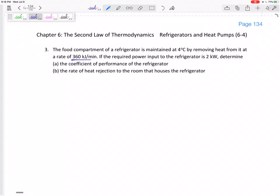A lot of this is just units and unit conversions and also figuring out what the problem statement is really telling us. It tells us 360 kilojoules per minute, what is that? It tells us 2 kilowatts, what is that? The food compartment refrigerator is maintained at 4 degrees Celsius by removing heat from it at a rate of 360 kilojoules per minute. That is the rate of heat that we are removing from the colder stuff on the inside of the refrigerator. That is Q_L.